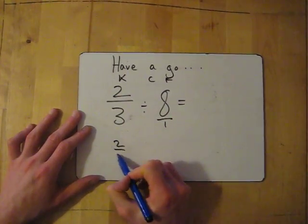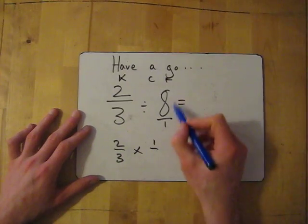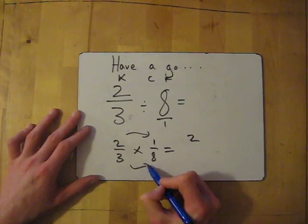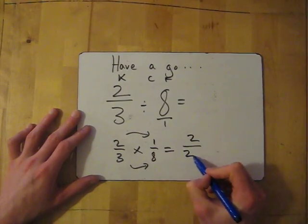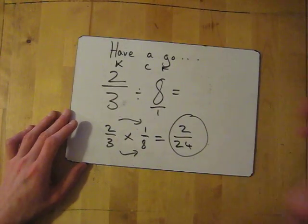So keep 2 thirds. Change, multiply. Flip. The 1 goes to the top now and the 8 goes to the bottom. Then we multiply. 2 times 1, 2. 3 times 8 equals 24. So my answer is 2 24ths. That's it.